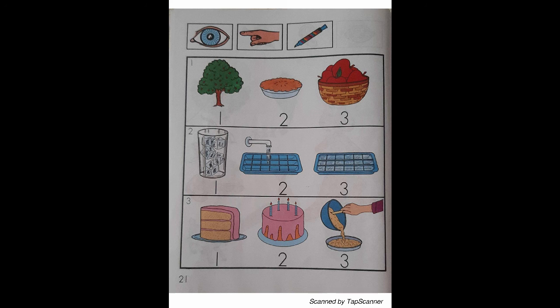With your marker, draw a line from what happened to the apple second to number 2. With your marker, draw a line from what happened to the apple third to the number 3.